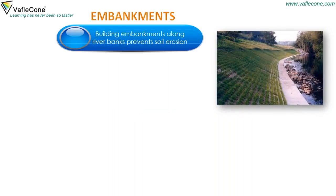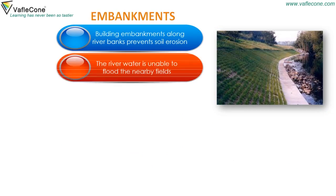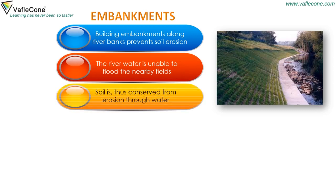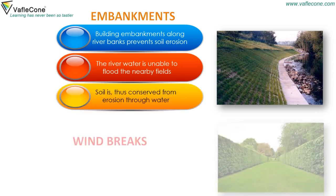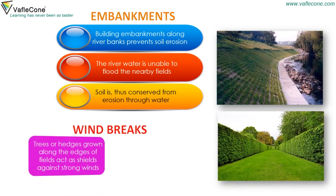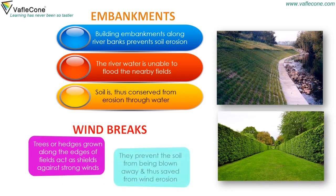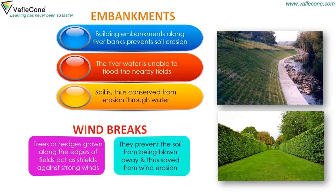Embankments: Building embankments along river banks prevents soil erosion. The river water is unable to flood the nearby fields, and soil is thus conserved from erosion through water. Wind breaks: Trees or hedges grown along the edges of fields act as shields against strong winds. They prevent the soil from being blown away and thus save it from wind erosion.